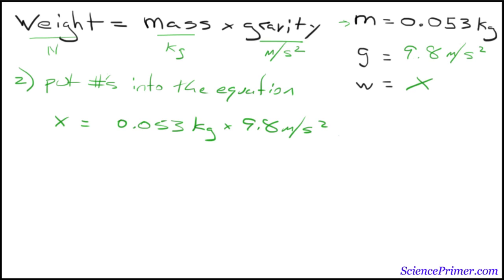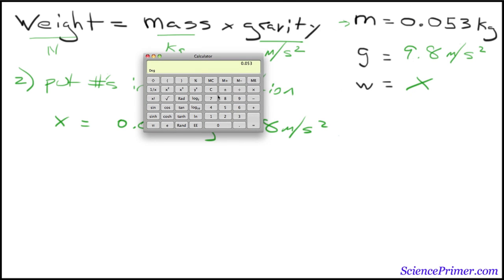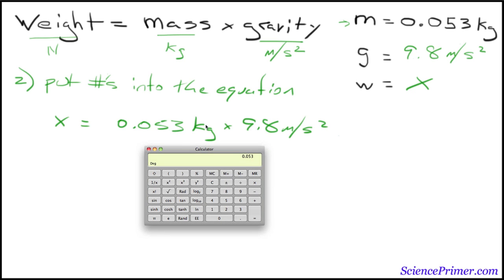Pull our calculator back. We have, we already have the 0.53 that we need. So, we'll just multiply that by 9.8. And we end up with 0.5194.